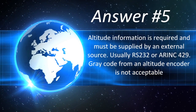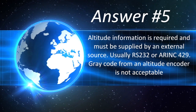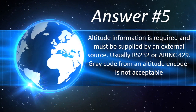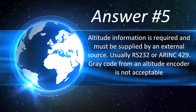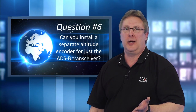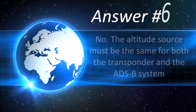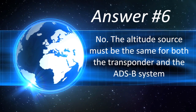How does the ADS-B transceiver receive altitude information? Altitude information is required and must be supplied by an external source capable of providing digital altitude information to the transceiver, usually RS-232 or ARINC-429. Gray code out from an altitude encoder is not acceptable. Can you install a separate altitude encoder for just the ADS-B transceiver? The answer is no. The altitude source must be the same for both the transponder and the ADS-B system.